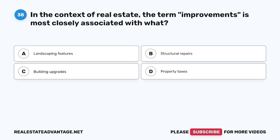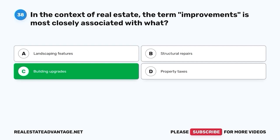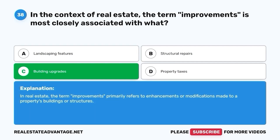Question 38. In the context of real estate, the term improvements is most closely associated with what? A. Landscaping features. B. Structural repairs. C. Building upgrades. D. Property taxes. The correct answer is C. Building upgrades. In real estate, the term improvements primarily refers to enhancements or modifications made to a property's buildings or structures.